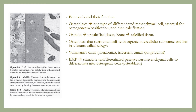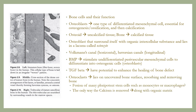Bone morphogenetic protein stimulates undifferentiated perivascular mesenchymal cells to differentiate into osteogenic cells. The transforming growth factor beta has the potential to enhance the healing of bone defects. Osteoclasts lie on uncovered bone surfaces; they resorb and remove bone. It is believed that osteoclasts are derived from the fusion of many pluripotential stem cells, such as monocytes or macrophages. Calcium can only be removed from bone by osteoclastic activity, which removes the organic matrix and the calcium simultaneously.